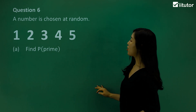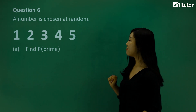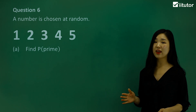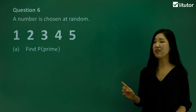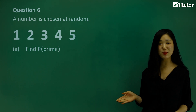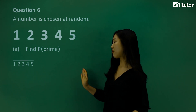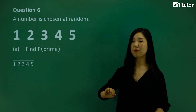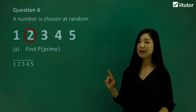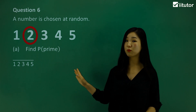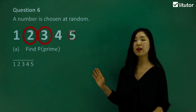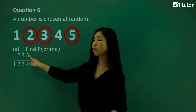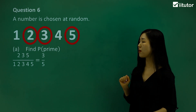Question 6: a number is chosen at random from 1, 2, 3, 4, 5. Find the probability of a prime number. A prime number is divisible by 1 and itself only. Please remember that 1 is not a prime number — 2 is the smallest prime number. So putting all outcomes on the denominator gives us 5. Counting the prime numbers: 2, 3, and 5. Those are the prime numbers, so we put 3 on the numerator. The probability of a prime number is 3 out of 5.